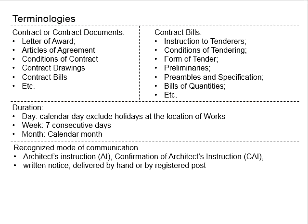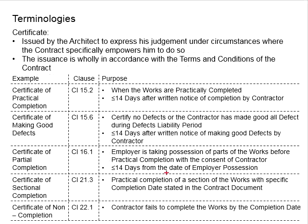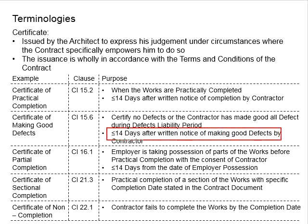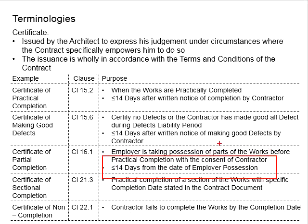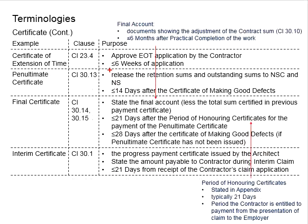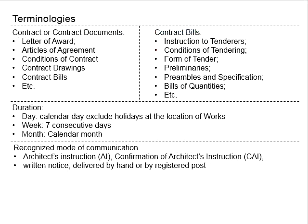Next, we talk about duration. In the conditions of contract, duration limits are normally stated. For example, within 14 days after the date of employer possession, less than six weeks for applications, or less than six months after practical completion of work, and so on.